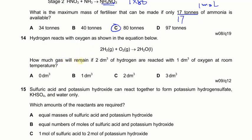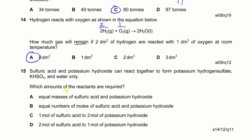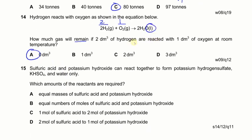Next: how much gas remains if 2 dm³ of hydrogen reacts with 1 dm³ of oxygen? According to the equation, 2 moles of H₂ requires 1 mole of O₂, so 2 dm³ of H₂ reacts exactly with 1 dm³ of O₂ with nothing left over. The water produced is liquid, so 0 dm³ of gas remains.